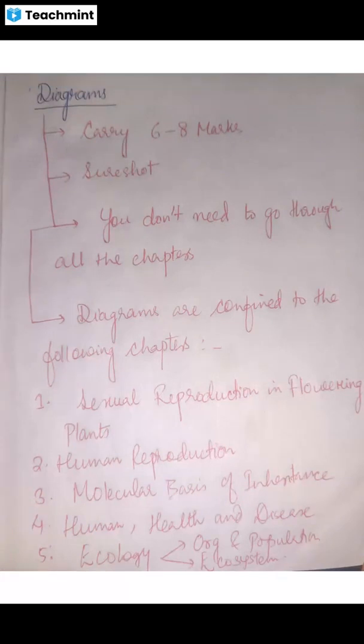The good part is that for diagrams, you do not have to go through all the chapters. The diagrams are confined to specific chapters. There are a total of 16 chapters in Class 12 biology, but the sure-shot diagrams come from only a few of them.